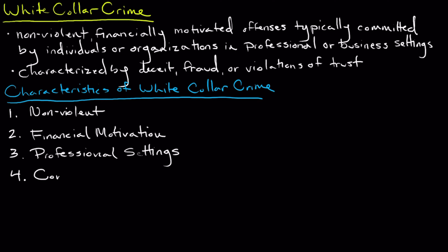Lastly, white-collar crimes can be extremely complex. They're often intricate and involve sophisticated schemes or strategies to deceive victims, conceal illegal activities, and exploit vulnerabilities in systems or regulations. Now that you have a better understanding of white-collar crime and some of its characteristics, let's explore some of the common types.